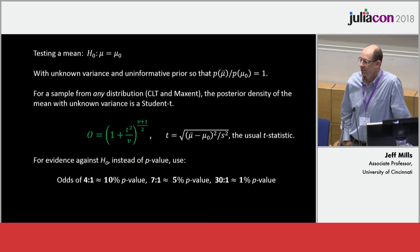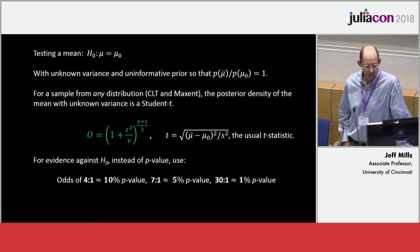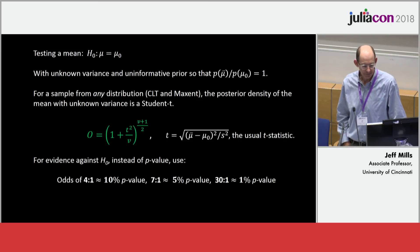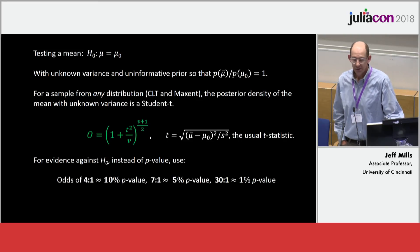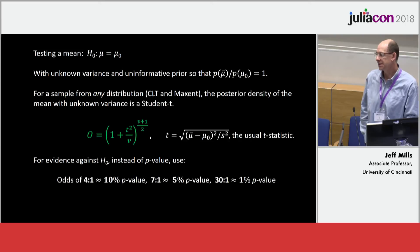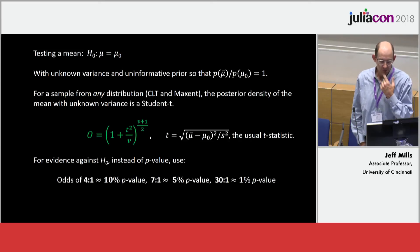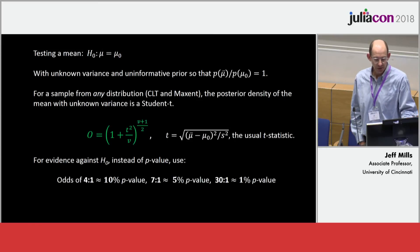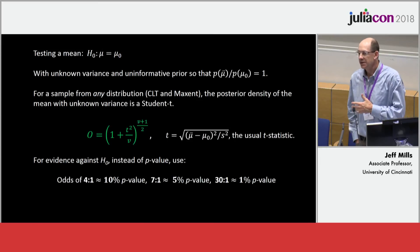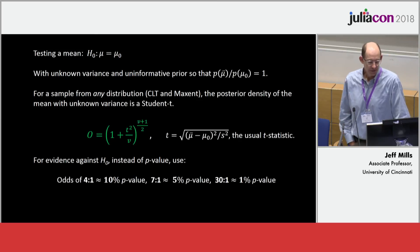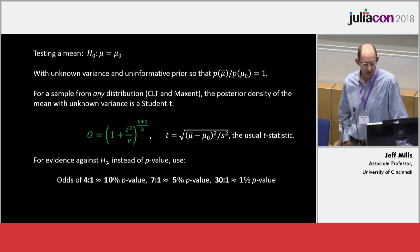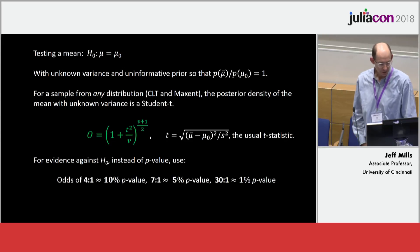For a simple hypothesis test that the mean equals some value, it's analytically tractable. With the one-versus-one comparison, you get a one-to-one correspondence with the t-statistic and the p-value. A t of around two gives you a p-value of five percent and posterior odds of seven to one. As n goes to infinity and t goes to 1.96, the posterior odds go to 6.8. So there's this nice one-to-one correspondence.